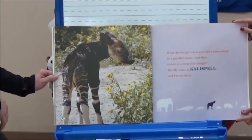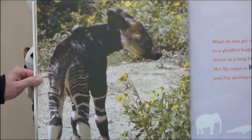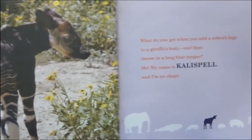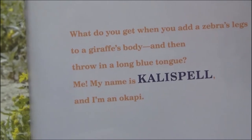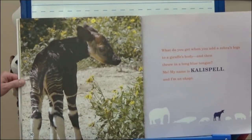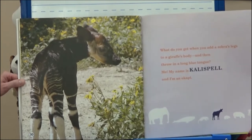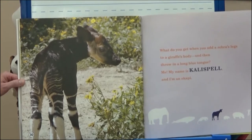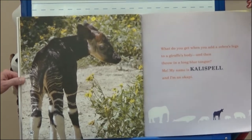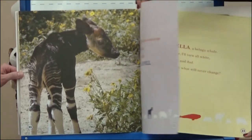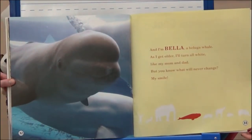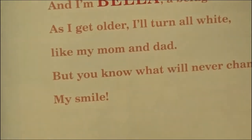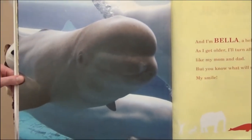What do you get when you add a zebra's legs to a giant giraffe's body and then throw in a long blue tongue? Me — my name is Callie Spell and I'm an okapi. It has the zebra's stripes but a giraffe's body — it's a different animal, called an okapi. I'm Bella, a beluga whale. As I get older, I'll turn all white like my mom and dad. When it gets older it will turn white — that's a detail about our beluga whale.